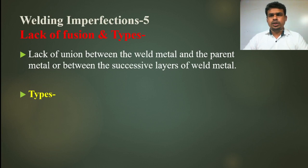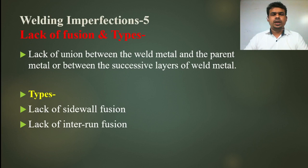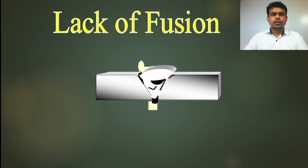I hope you will watch the full lecture to understand the complete topic. The types of lack of fusion are: lack of sidewall fusion, lack of internal fusion (interrun fusion), and lack of root fusion. These three types can occur in welding.